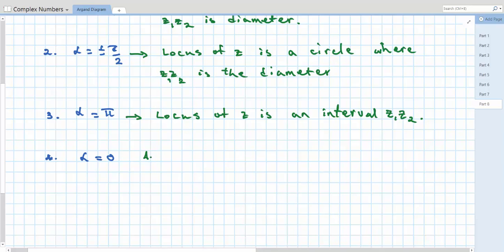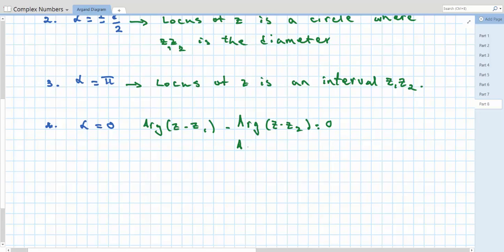Arg of z minus z1 minus arg of z minus z2 equals 0. Or, another way of writing that is arg(z - z1) equals arg(z - z2).